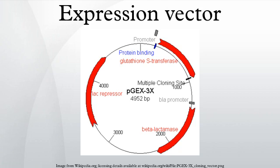Baculovirus, a rod-shaped virus which infects insect cells, is used as the expression vector in this system. Insect cell lines derived from Lepidopterans, such as Spodoptera frugiperda, are used as host. The shuttle vector is called BACMID, and protein expression is under the control of a strong promoter, PPOLH.